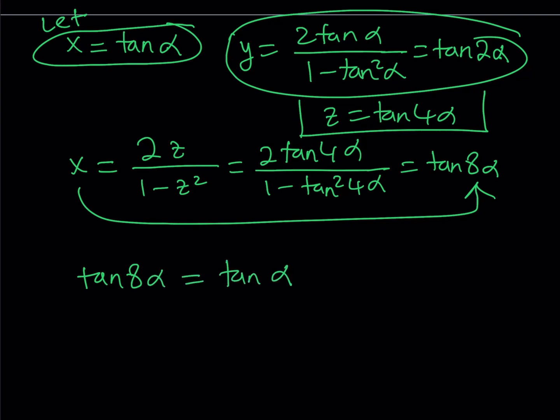This is now a trigonometric equation, no longer polynomial. This equation will not be necessarily that easy, but as is it's pretty simple. How do you solve this equation? There are many ways — you can set the 8α and α equal to each other and add k times π. But let's do it in a more artistic way.